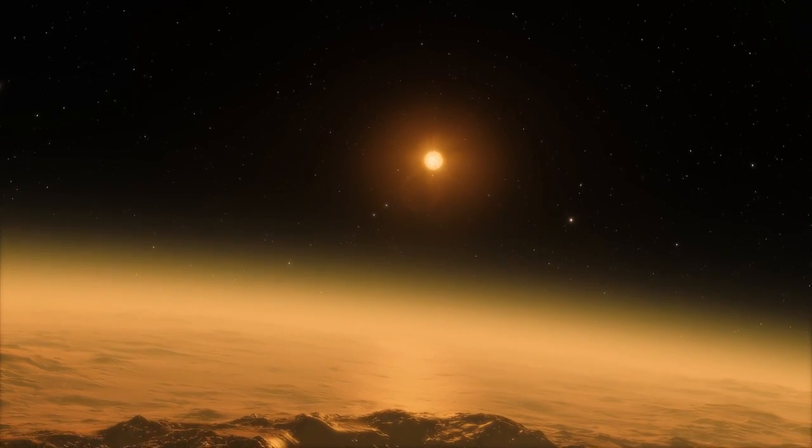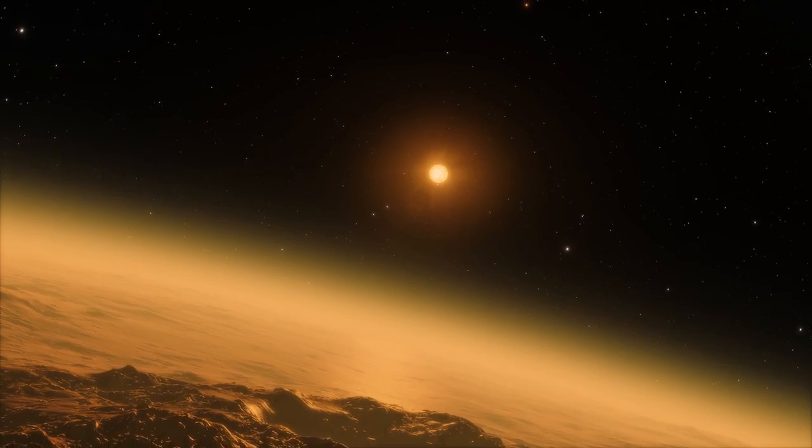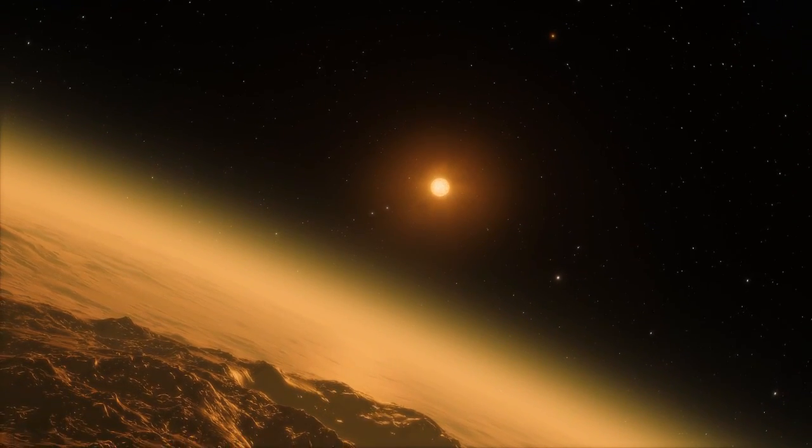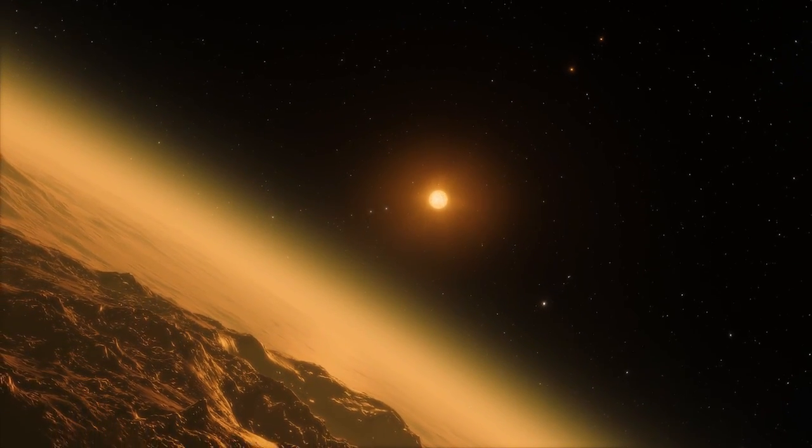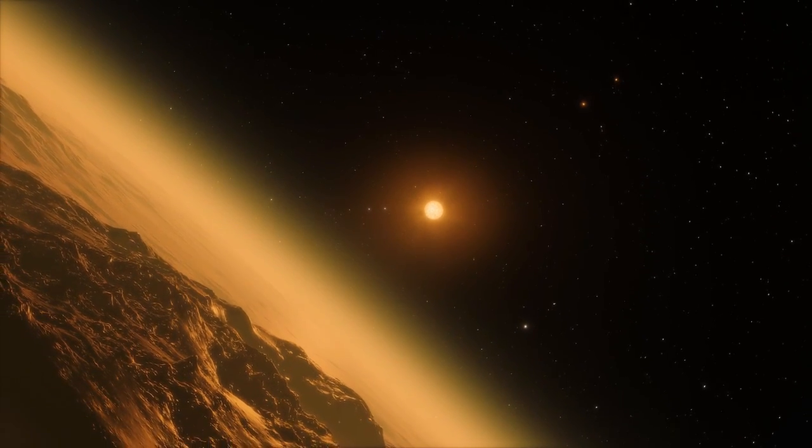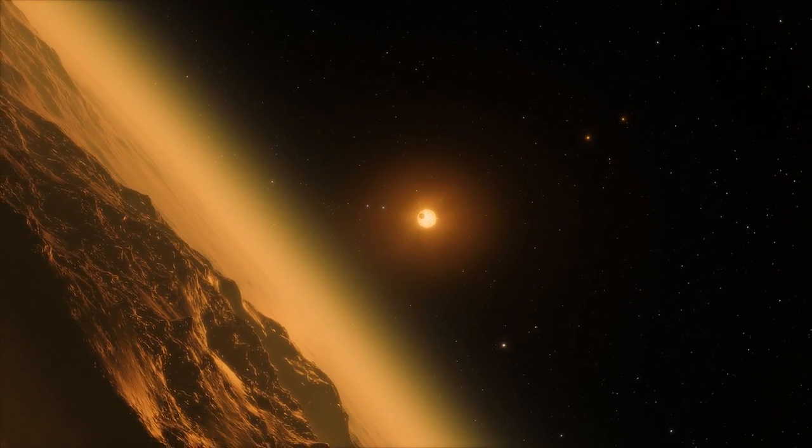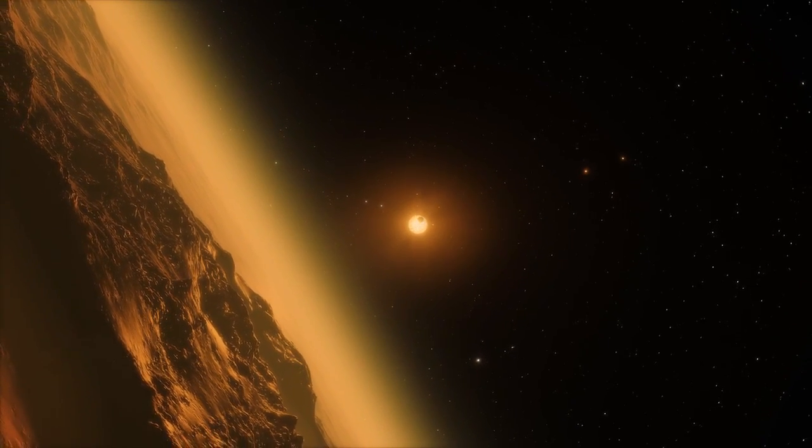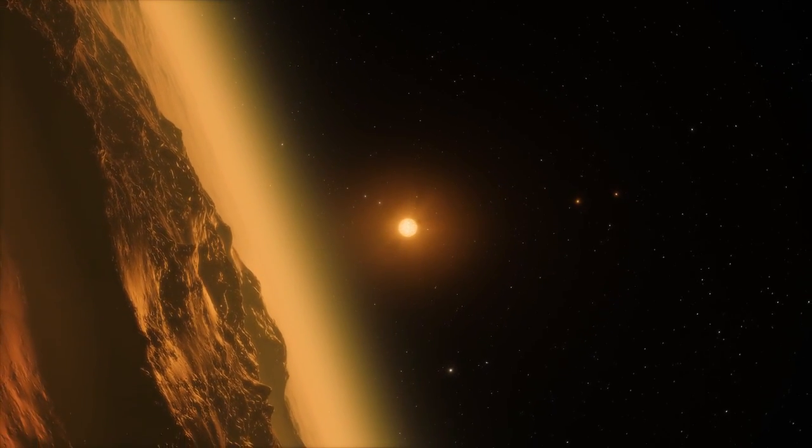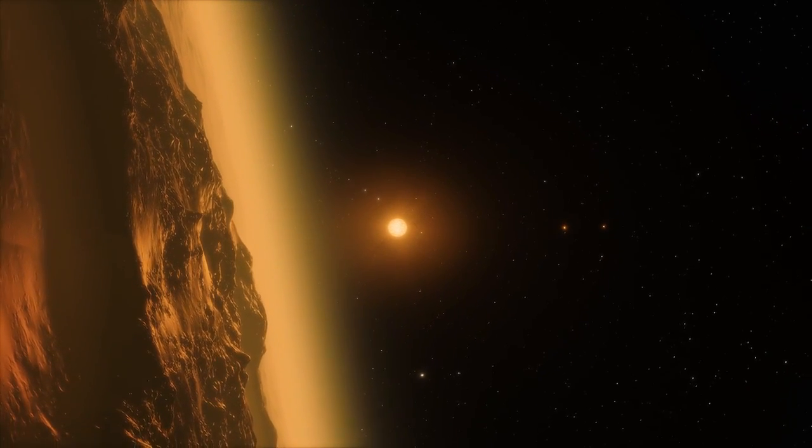However, three planets in the system, TRAPPIST-1e, f, and g, represent the Holy Grail for planet-hunting astronomers as they orbit in the star's habitable zone. Excitingly, this could mean they harbor oceans of water on their surfaces.